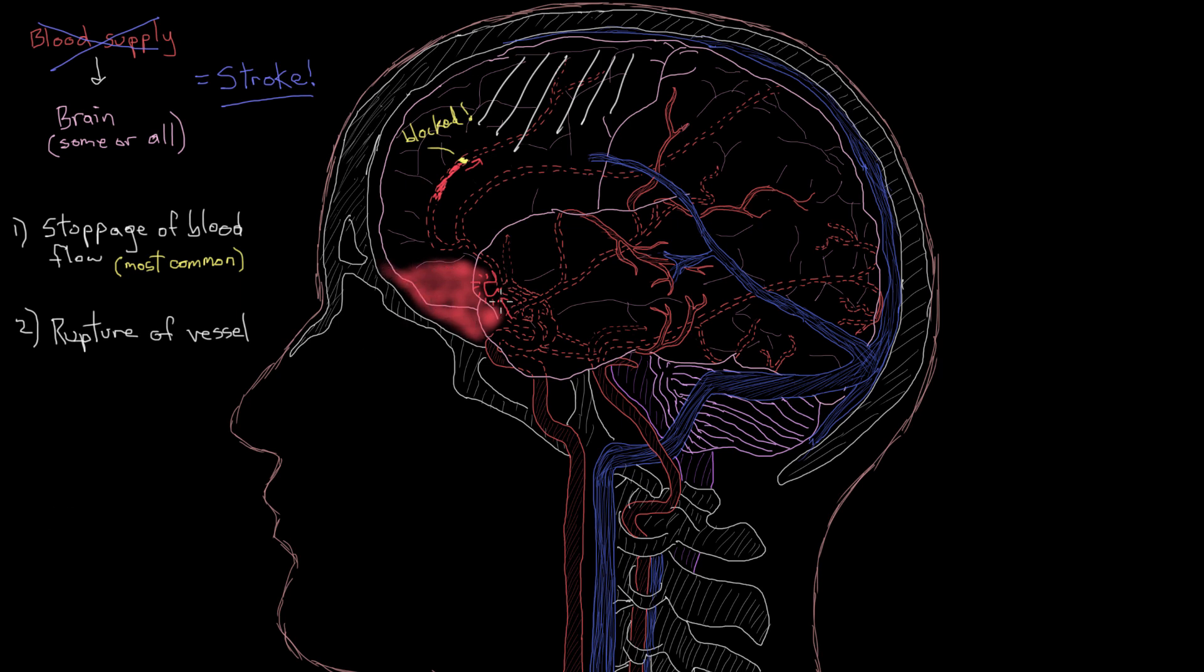If it ruptured, you'd start leaking blood out of your cerebral circulation and into the space around your brain. There are two major consequences. First, because you're leaking blood out, the downstream parts of your anterior cerebral artery won't be getting any blood. This downstream brain tissue is going to have a lack of oxygen, so it'll start to get damaged. Also, the blood will start to collect and push on your brain tissue and cause damage that way.